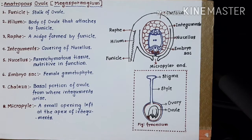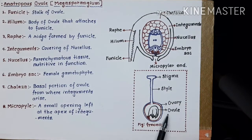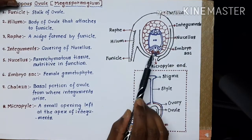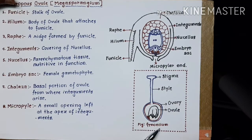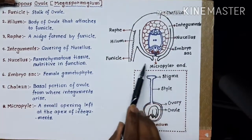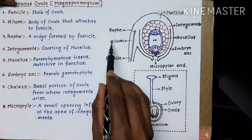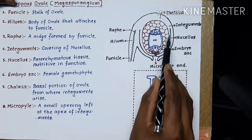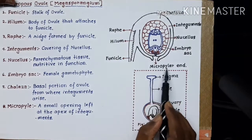Now, if you take the longitudinal section of the ovule, you will observe these structures and parts. This figure is showing a longitudinal section of the ovule. Here you can see: the funicle, the hilum, the raphe, the chalaza, the integuments, the nucellus, and the embryo sac, or megaspore. This is megasporogenesis.